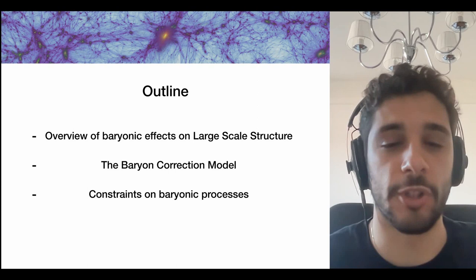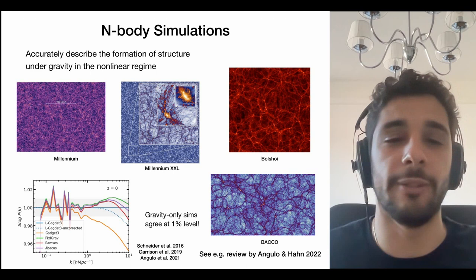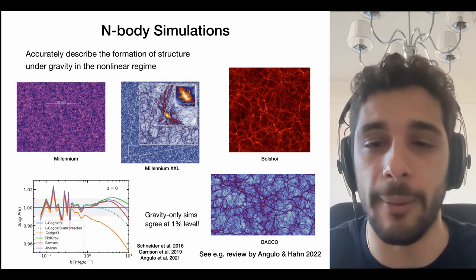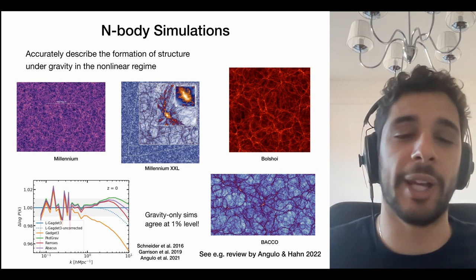Let's jump straight into the problem. At the gigaparsec scale the universe is homogeneous and linear, but if we zoom in to megaparsec or hundreds of kiloparsec scales we see the cosmic web emerging. The cosmic web is formed by filaments, halos, and voids — structures that are typically highly non-linear and can currently only be modeled through numerical simulations.